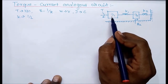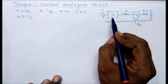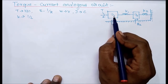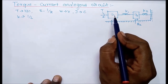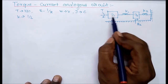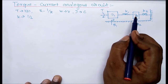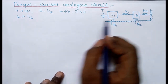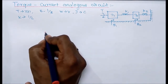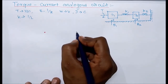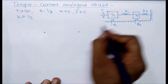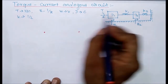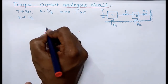Similarly, like torque-voltage analogy, here also we have to consider how many moment of inertia elements are available. There are two moment of inertia elements here. Therefore, the final circuit diagram will have two nodes.